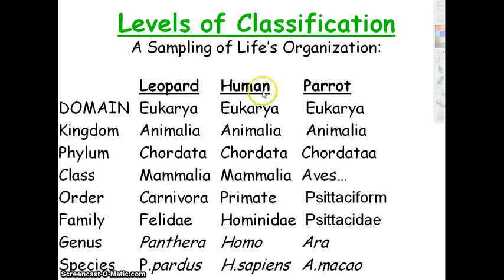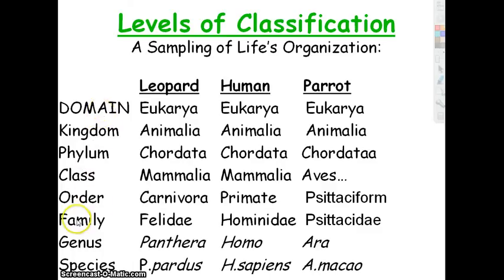You don't have to know the specifics of those three organisms; you do need to know these levels. Sometimes I've heard 'kings play chess on fine gold sheets.' Someone in my class came up with 'Kevin, please come over for good spaghetti' — domain, kingdom, phylum, class, order, family, genus, species. It's an easy way to remember it.